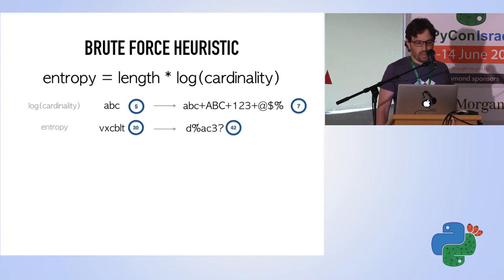For example, if we have a 6-character long password, the entropy using only lowercase letters is 30—just multiply 5 by the length. If we include uppercase, numbers, and special characters, the entropy grows up to 42.